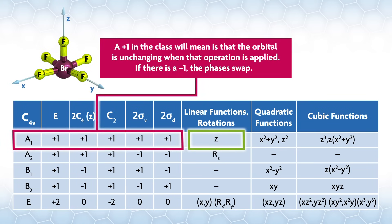Scanning down the column of linear functions, you see that the z vector is in the A1 rep. Essentially what a plus one in the class will mean is that the orbital is unchanging when that operation is applied. If there's a negative one, the phase is swapped.